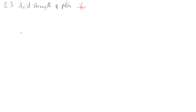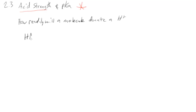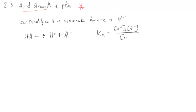So what is acid strength and how does it relate to pKa? Acid strength really means how readily will a molecule donate its proton. We look at a generic reaction: HA, where H is the proton and A is the conjugate base. HA will separate to H+ and A−. We can write the Ka of that reaction, the acidity constant, as equal to the products H+ times A− over HA. That's just an equilibrium constant — the equilibrium constant for an acid dissociation, which is why it's called Ka.